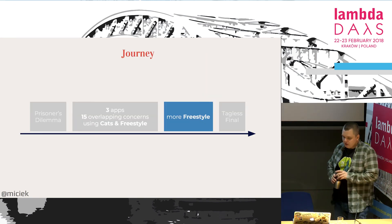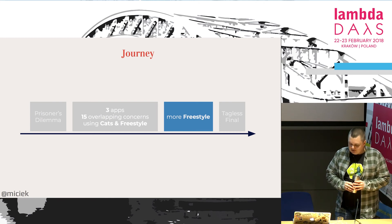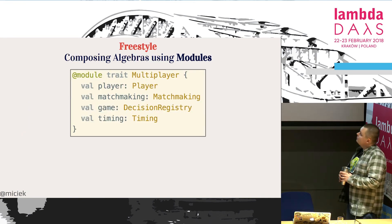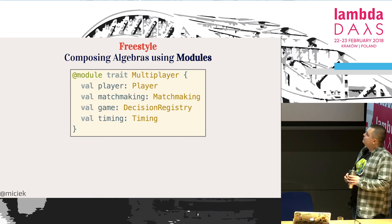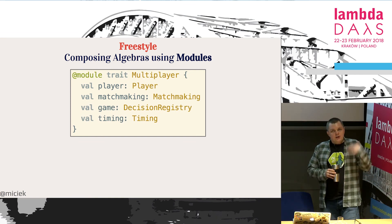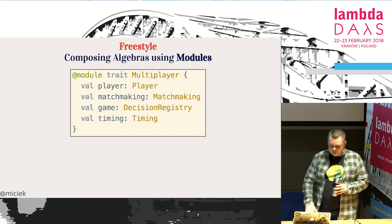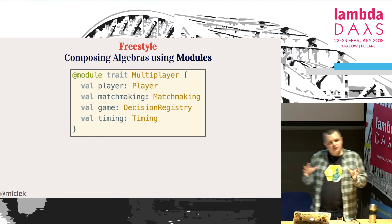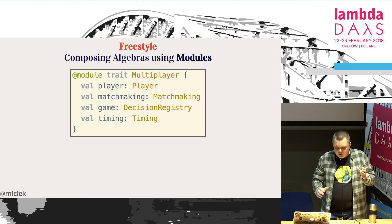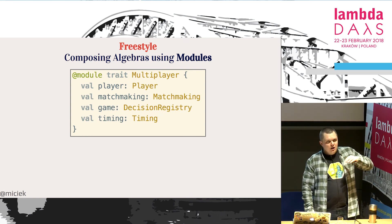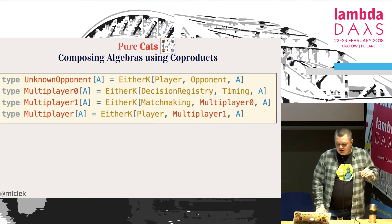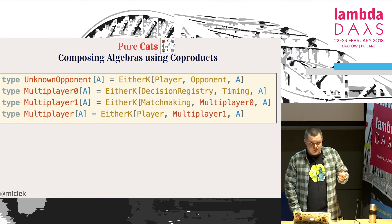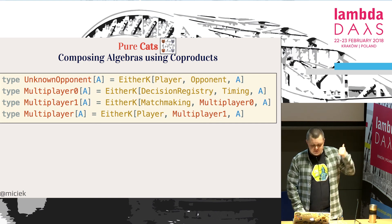Some of the things that were problematic with free have already been addressed by freestyle, which gives us really more. As a finishing note, let's go through some of those features. Composing algebras using modules: we have five different operation sets and a function that uses them — like dependency injection. In pure cats you'd really need to care about the order because the other way around it won't compile. Freestyle eliminates this kind of boilerplate.